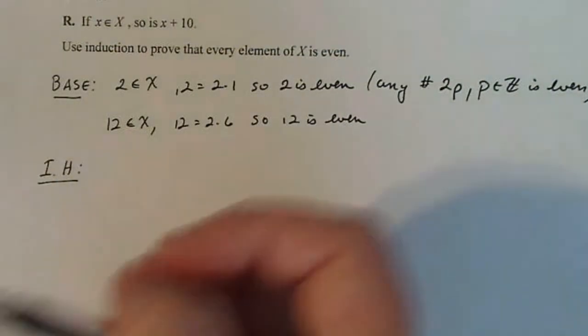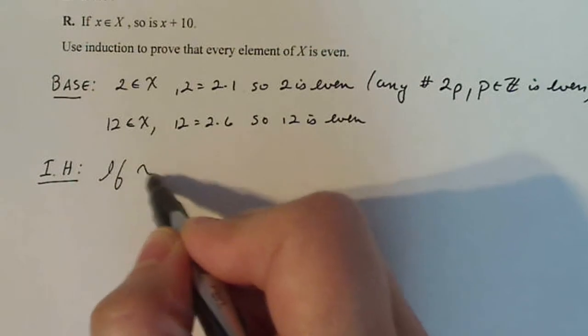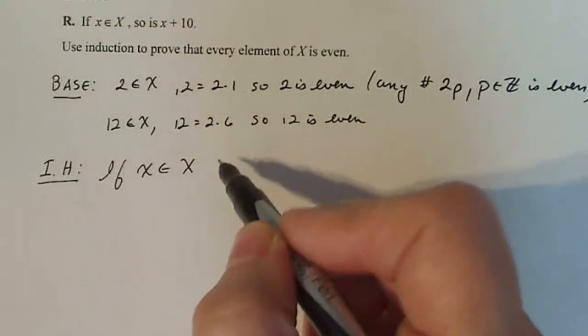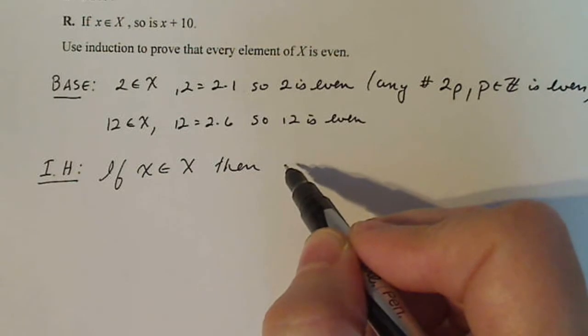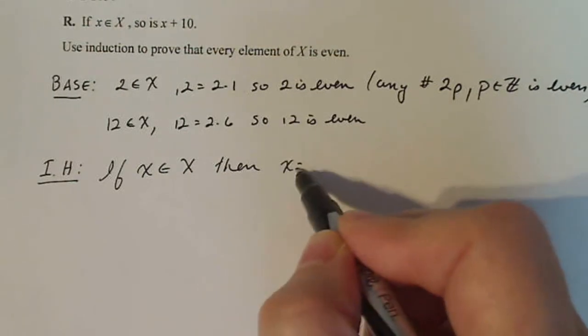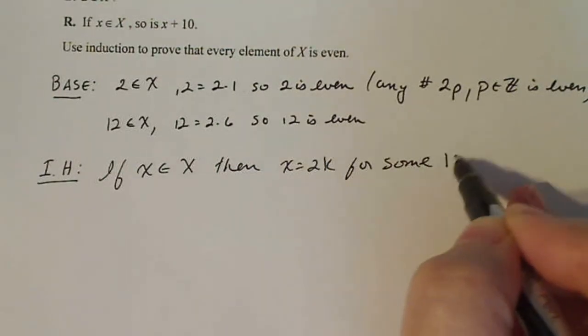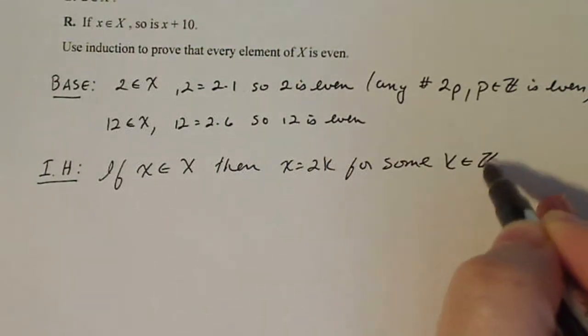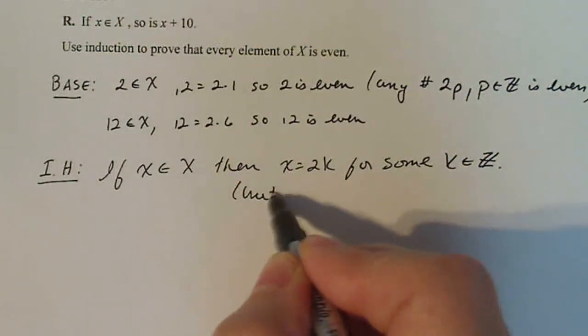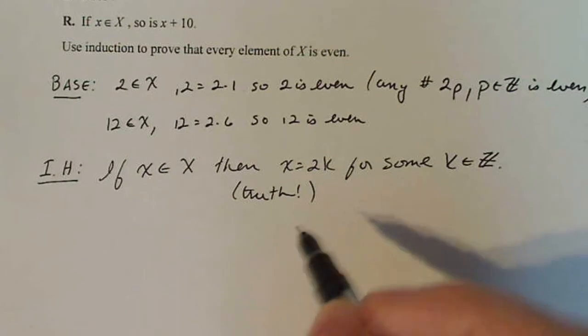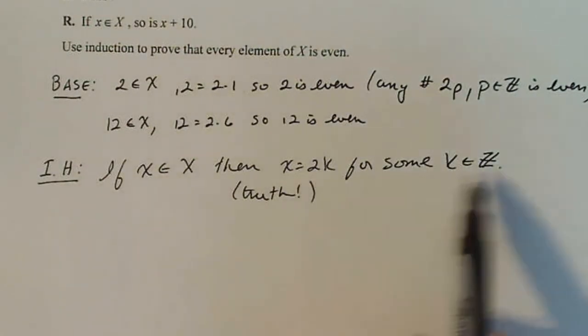So for my inductive hypothesis I'm going to state this is true: if x is in X, some random x, then x equals 2k for some k in Z. Okay, so I'm going to say this is the truth. If I pick an element in X, then x equals 2k for some k in Z.